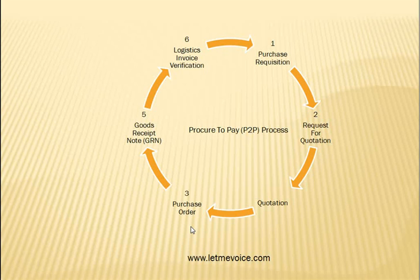A PO can also be raised for the procurement of direct consumable material. For example, if anyone procures material for a specific project or work, that material is treated as consumed on receipt, and hence inventory does not get updated in such cases. We have to mention account assignment in the PO for the proper effect on the cost object.